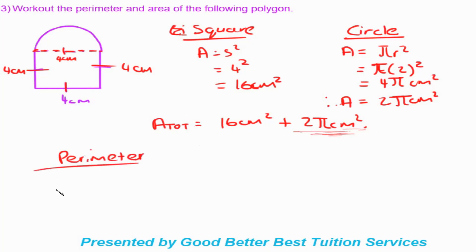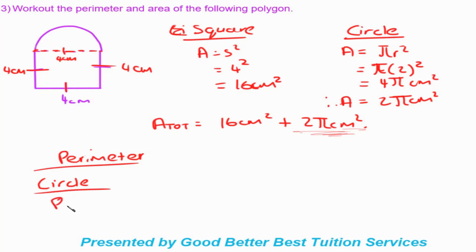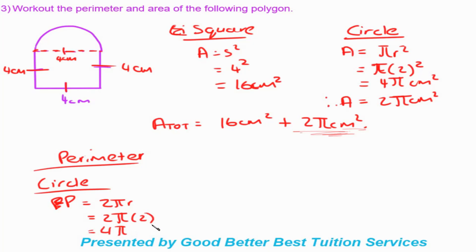Now for the perimeter. We'll handle the circle part first because the circle formula works differently. The full circumference of a circle is two pi r, but we only have half a circle, so we take half the result. Circumference equals two pi r equals two pi times two equals four pi. Dividing by two for the semicircle gives a perimeter contribution of two pi centimeters.